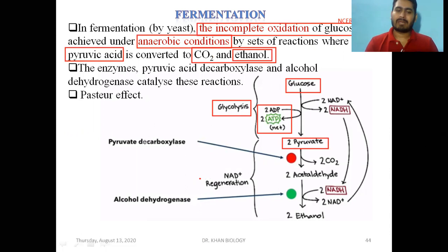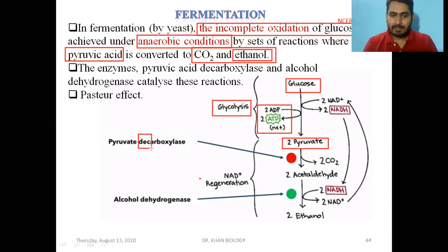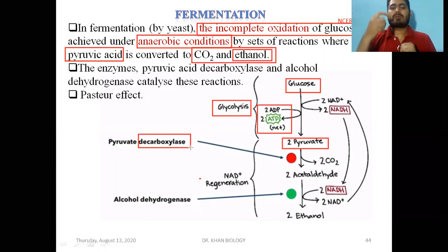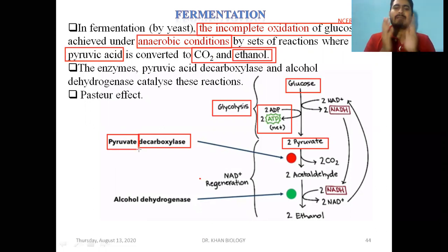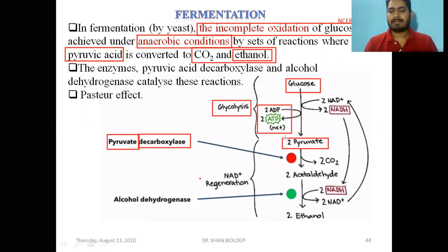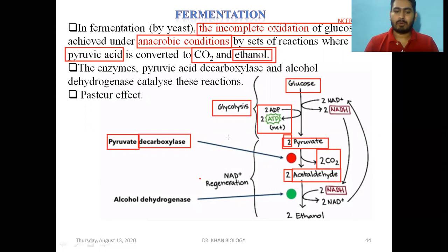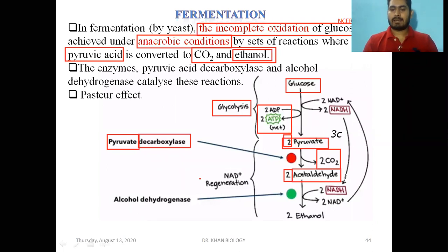When pyruvic acid is in anaerobic condition, the first enzyme is pyruvate decarboxylase. Remember, the enzyme that can release carbon dioxide is called decarboxylase. Pyruvate decarboxylase converts 2 molecules of pyruvic acid into 2 molecules of acetaldehyde, with carbon dioxide coming out. Pyruvic acid has 3 carbons, while acetaldehyde has 2 carbons — the one missing carbon is present in the released carbon dioxide.